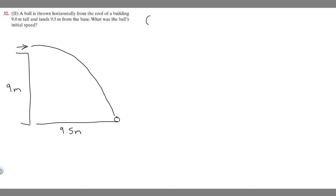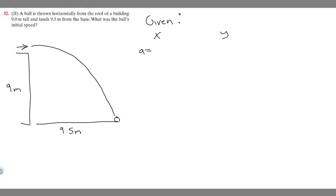Now that we've got a drawing, let's write down all of our givens. Whenever you have a two-dimensional problem, you want to write the givens for the x direction and then for the y direction, because you have to split them up. In the x direction, acceleration is 0 meters per second squared, and delta x is 9.5 meters because we started at 0 and go all the way to 9.5 meters.